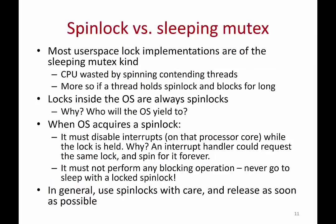So which is better — spin lock or sleeping mutex? Most user-space lock implementations are the sleeping kind, because you don't want to waste CPU cycles by spinning. If one thread holds a spin lock, all other threads are constantly getting scheduled and constantly running, wasting CPU cycles without doing useful work. You might as well block those threads and do useful work in other threads. In general, in user programs it is better to use a sleeping mutex, though spin locks are also an option.